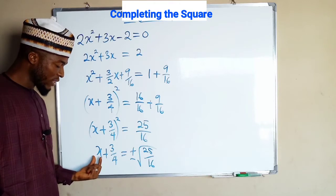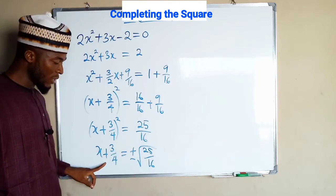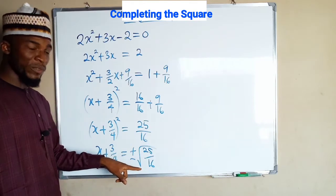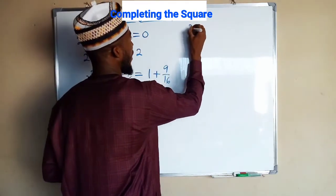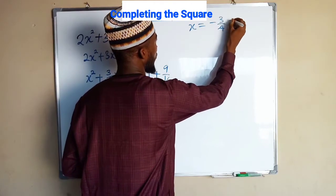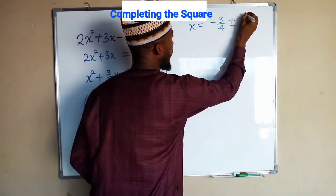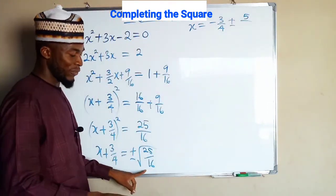Since we are only interested in knowing x, we are going to take this term to the right-hand side. It is positive here, once it crosses over it becomes negative. So we have x equal to negative 3 over 4 plus or minus. Square root of 25 is 5, square root of 16 is 4.